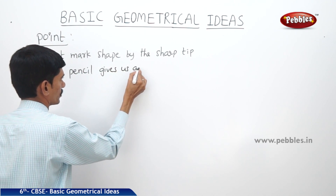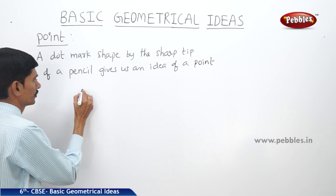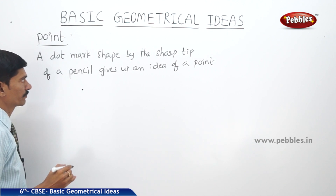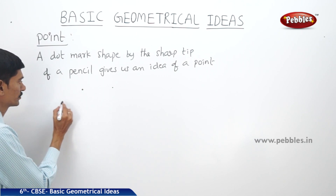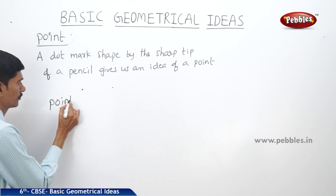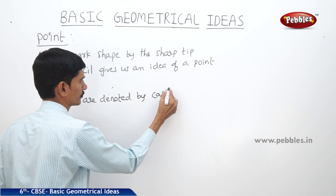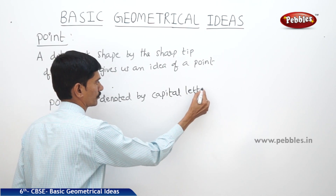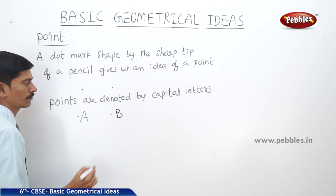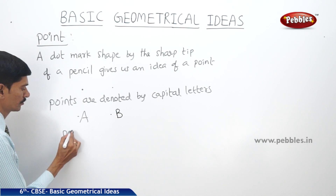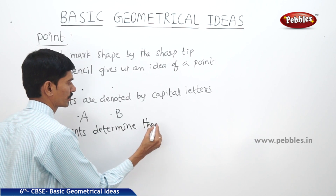The dot mark made by the sharp tip of a pencil gives us an idea of a point. Points are denoted by capital letters. For example, we write a point as capital A, and another point as capital B. Points determine the location.